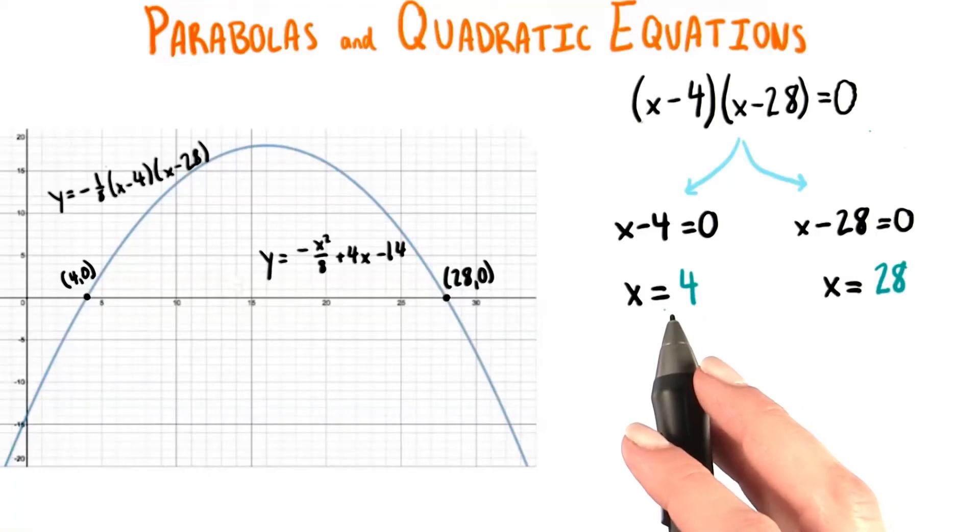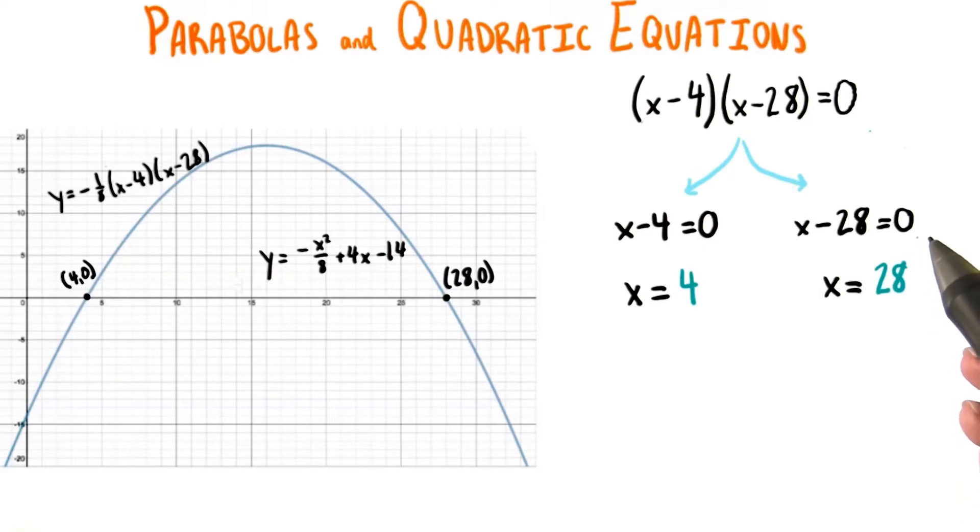Solving for x, we get x equals 24 for this equation and x equals 28 for this equation. Interestingly enough, these are the x coordinates of the two x-intercepts of our graph.